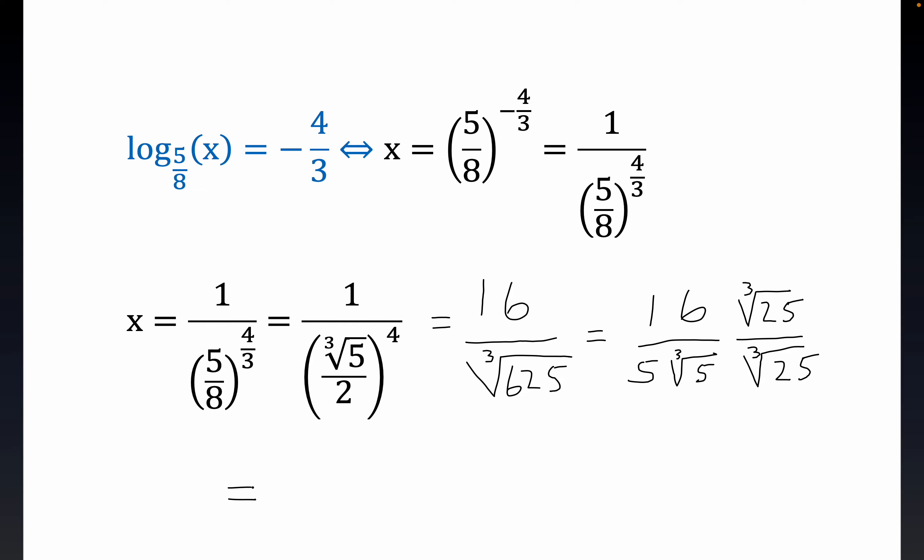This would be the cube root of 125, which is 5, and so what we would end up with here would be 16 times the cube root of 25 upstairs. But what's going to be left downstairs? We already have a 5 here, but then the cube root of 5 times the cube root of 25 is the cube root of 125, which is 5 again. So you see, this would be all over 25.